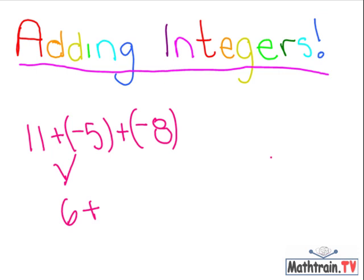So after this, we're going to add 6 plus negative 8. Like I said before, when you add a negative, you basically subtract. So 6 minus 8 is negative 2.